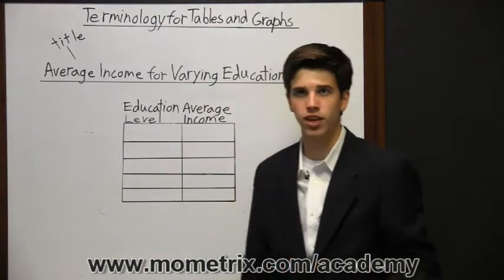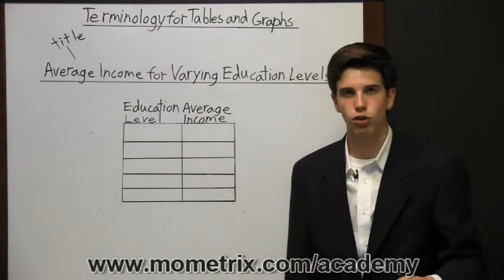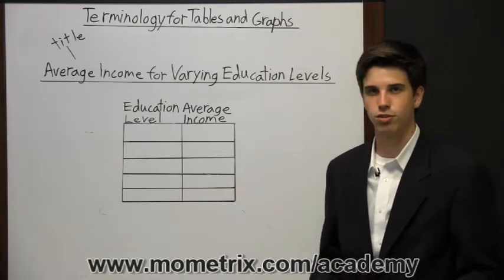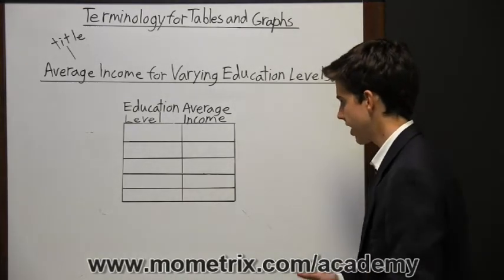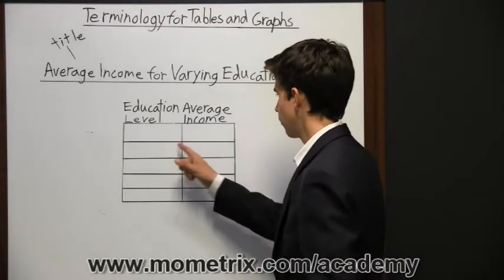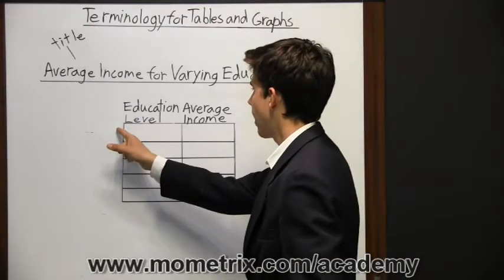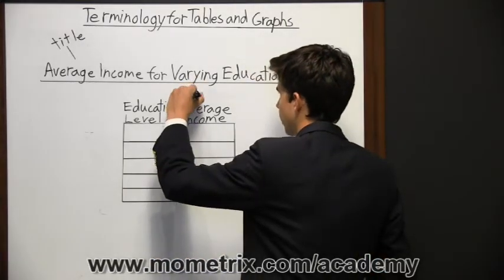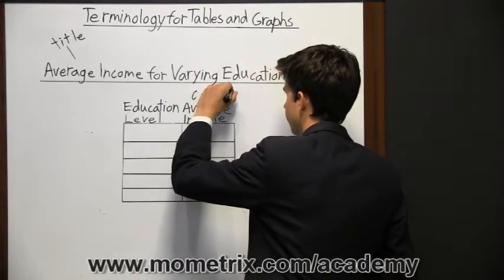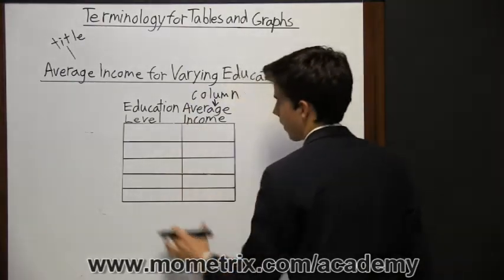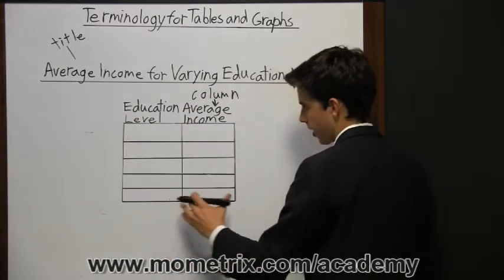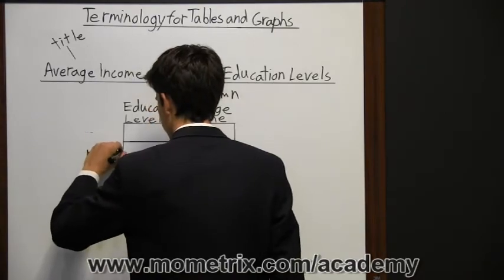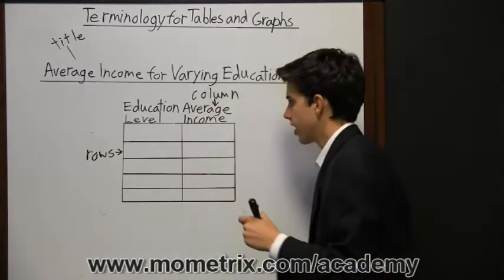A table is composed of vertical columns and horizontal rows, and the information is laid out in those columns and rows. This table in particular has two vertical columns and five horizontal rows. So this right here is a column, all of this, and then this right here is a column as well, and then we have five rows. This right here is a row.